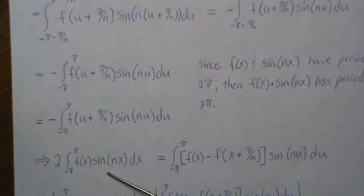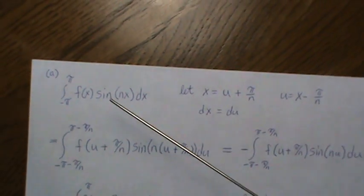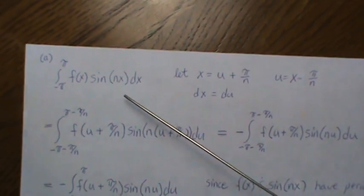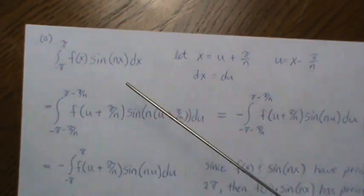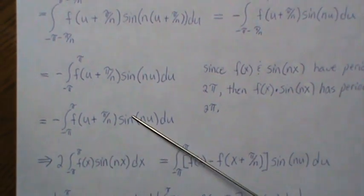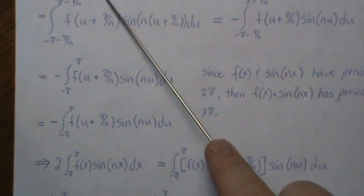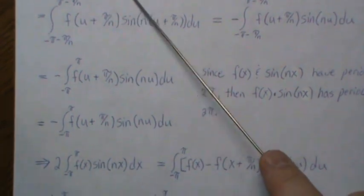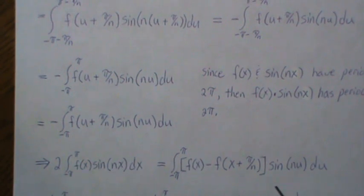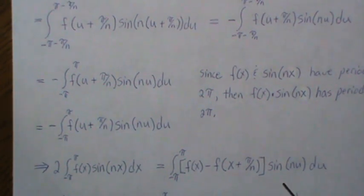So if we take two of these, this plus itself is going to equal this plus that, and that's what I say here. We take two of the original integral, that equals the original plus this, which is what we get here.